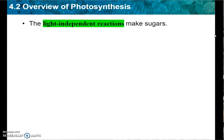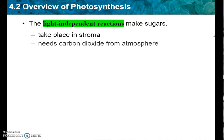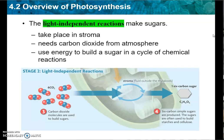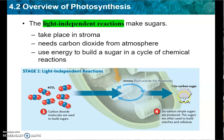Next come the light-independent reactions. We used to call them the light and the dark reactions, but now we call them light-independent. That's the part where we're actually making the sugar, and it takes place in the stroma. It needs carbon dioxide from the atmosphere and uses energy to build a sugar in a cycle of chemical reactions. The carbon dioxide that goes to make that sugar molecule — that glucose — the carbon comes from CO2 in the air, the same thing that you breathe out. The plants take it in, reassemble it, and turn it into sugar. So literally, plants are making matter out of thin air.